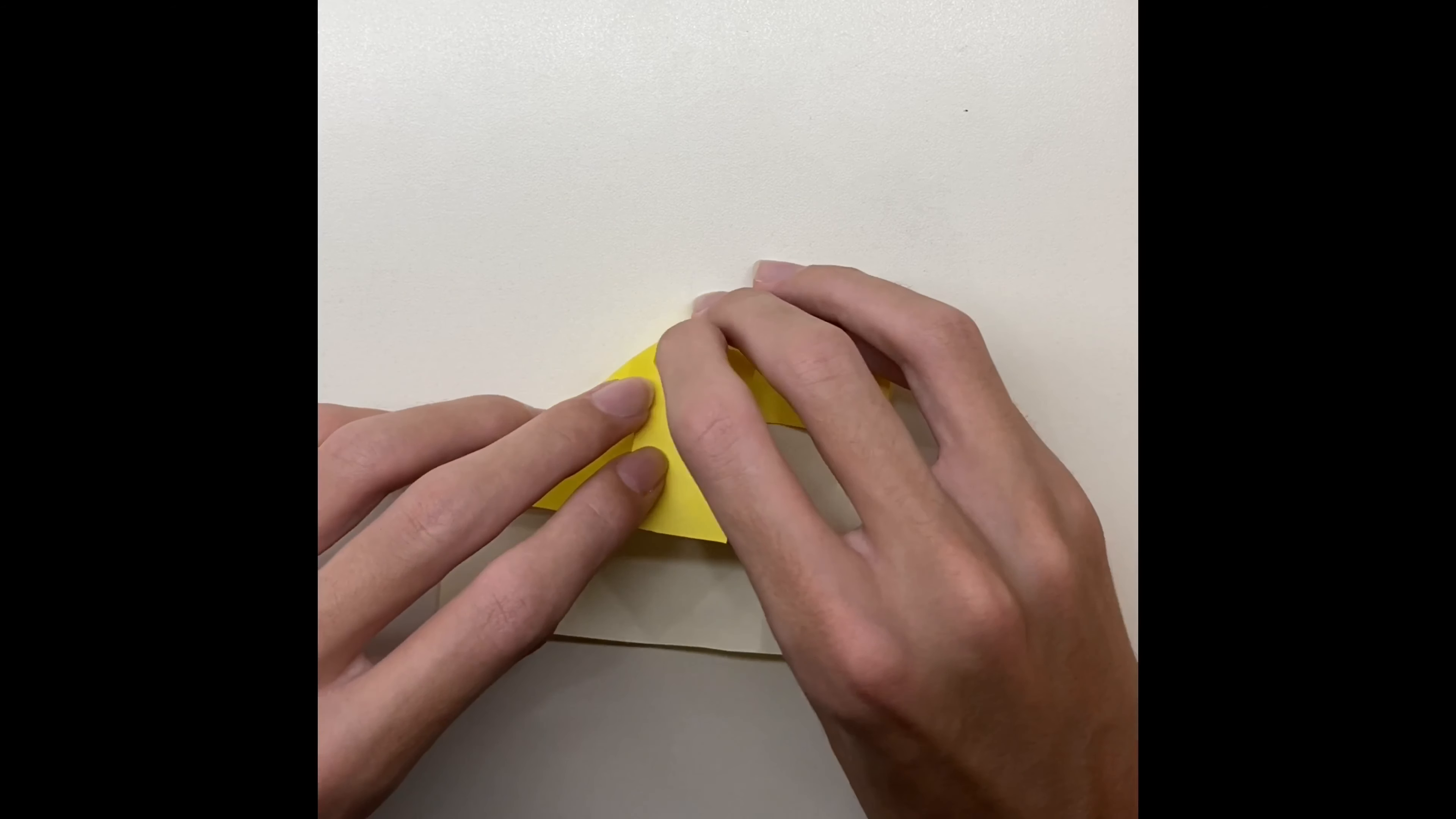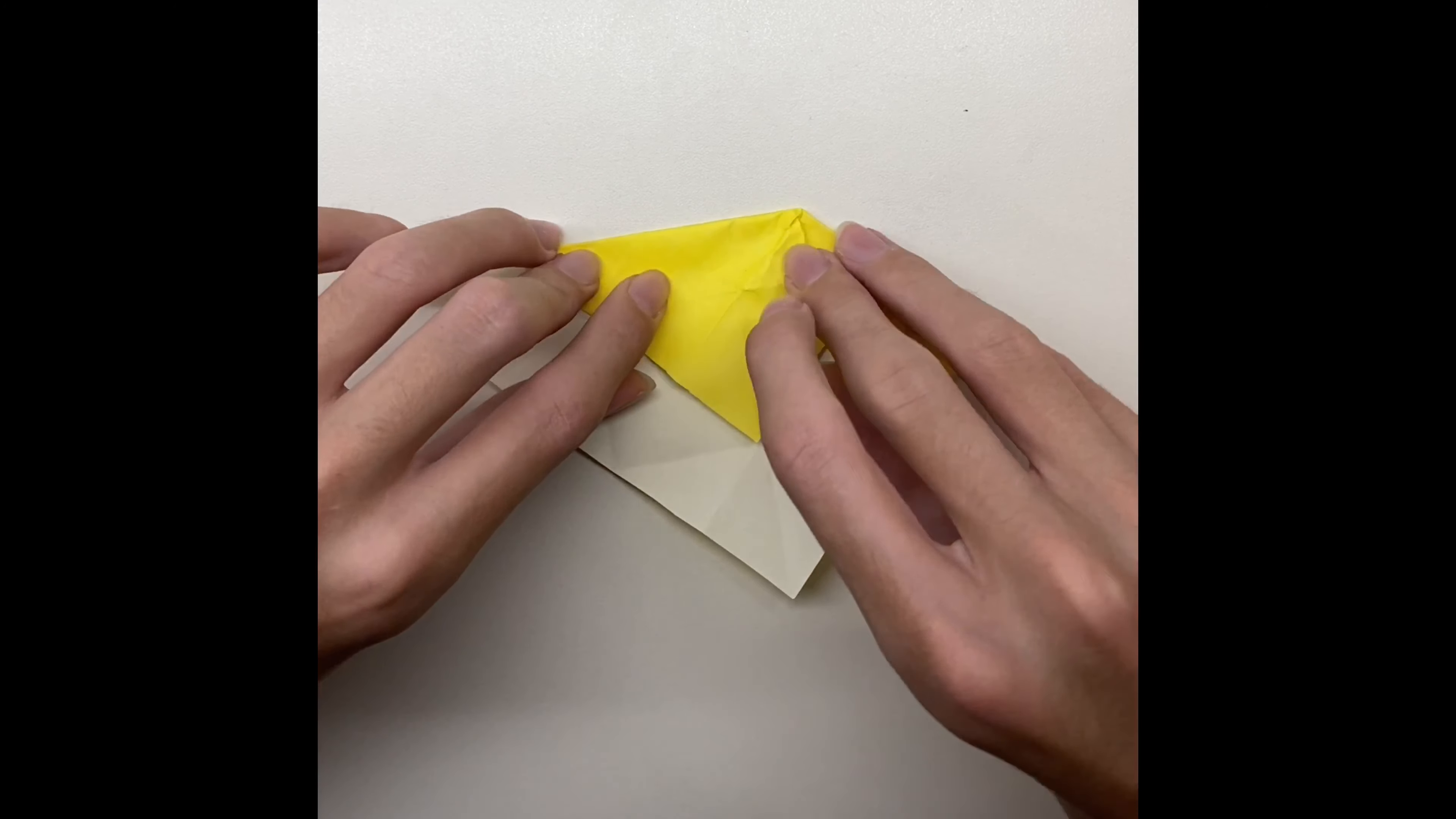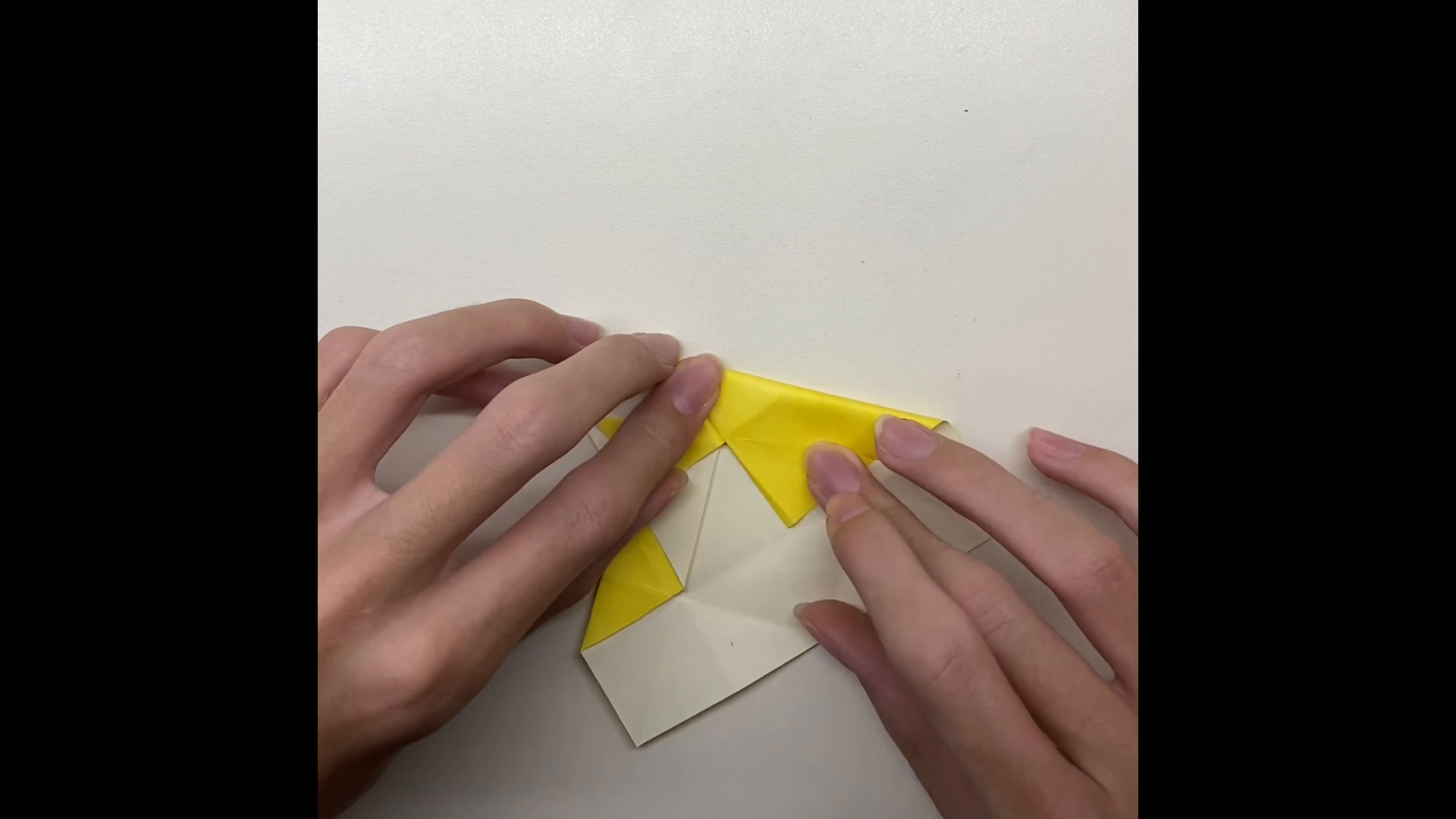Fold out some of the paper, and then fold the paper again. Fold the triangle into a half, and then do all of this again on the other side.